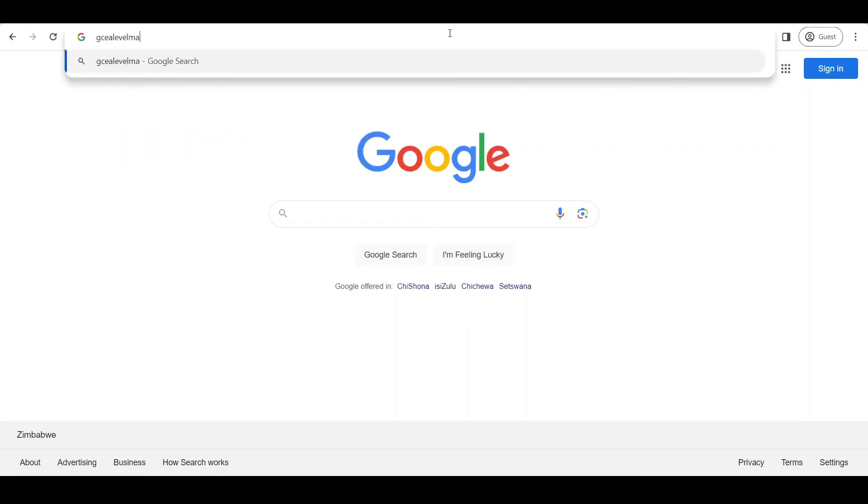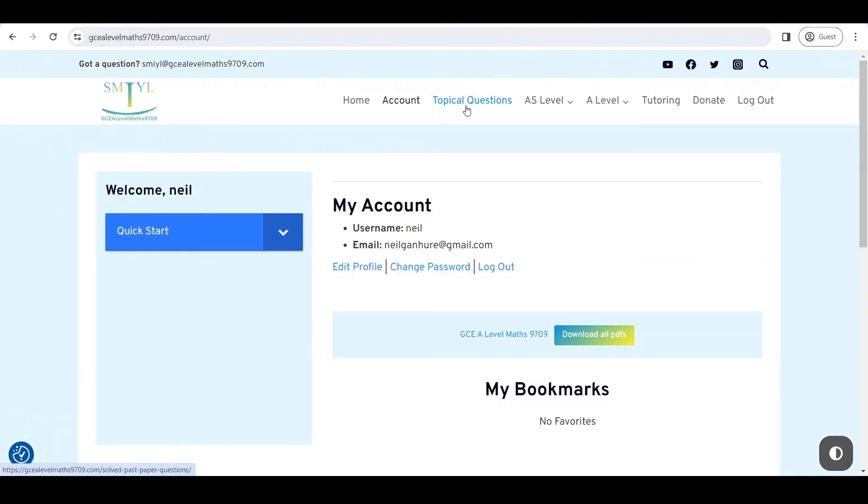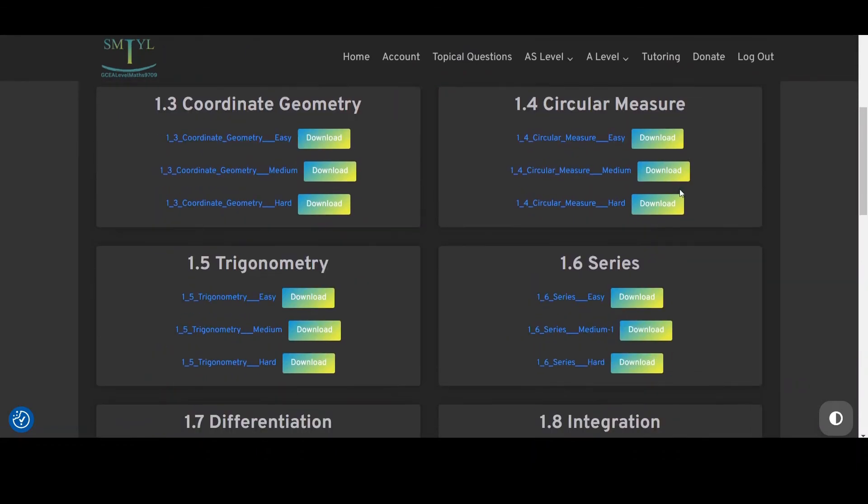Head to your browser, type in GCEALevelMaths9709.com, sign up if you haven't already. It's completely free. Then head to the topical questions tab, and you'll find the stats1 worksheets.